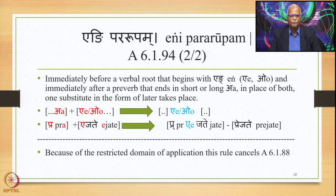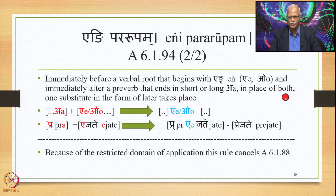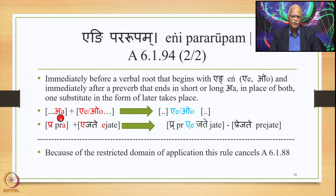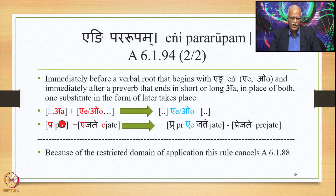To repeat: immediately before a verbal root beginning with Eng, and immediately after a preverb ending in short or long A, one substitute in the form of the Pararupa (latter sound) takes place. So we have a preverb ending in A followed by a verbal root (Dhatu) beginning with E or O. The output generated by 6.1.94 would be just E or O in place of both A and E/O.